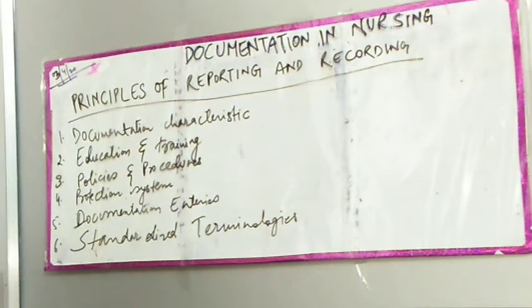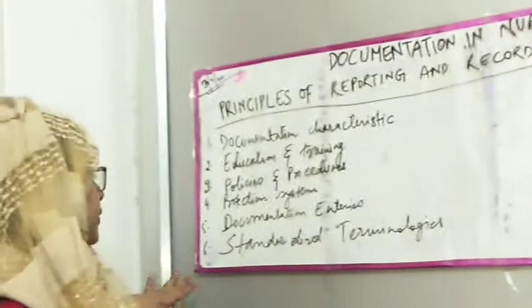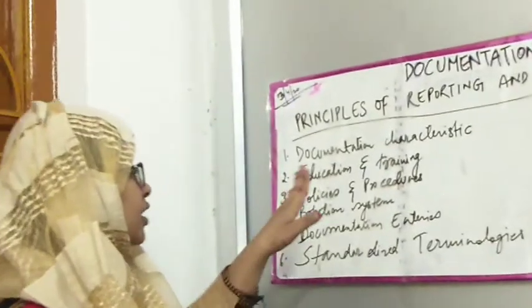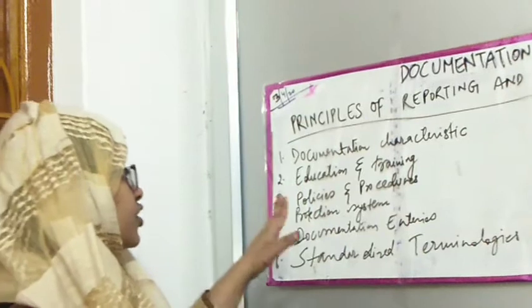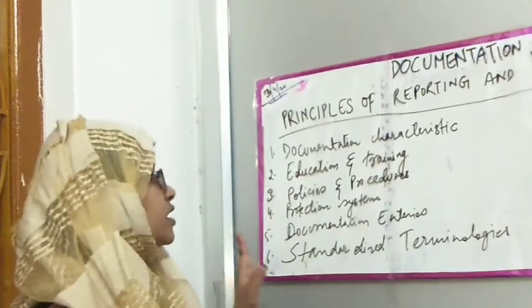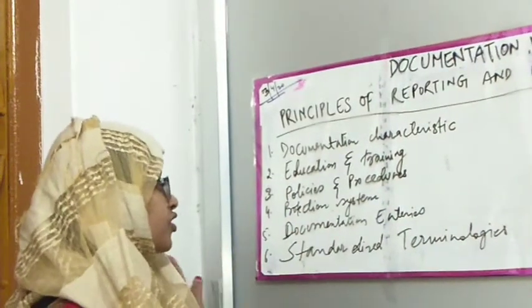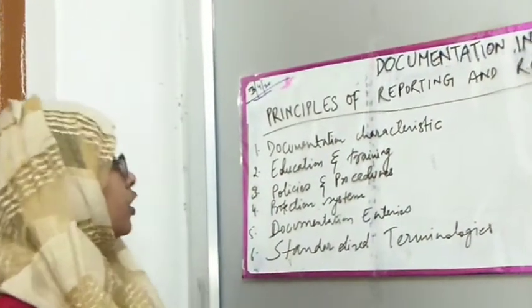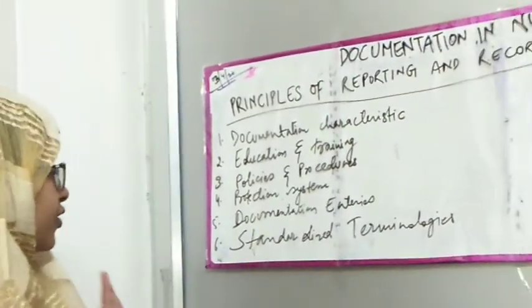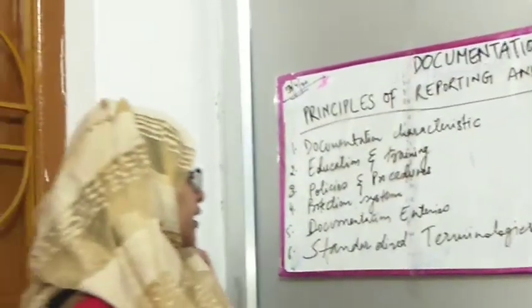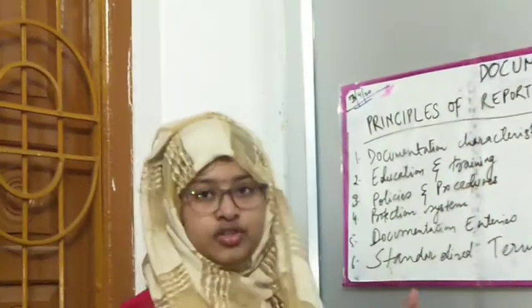So now you have the six principles of reporting and recording: Documentation Characteristics, Education and Training, Policies and Procedures, Protection System, Documentation Entries, and Standardized Terminology.